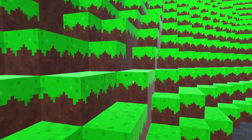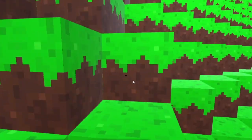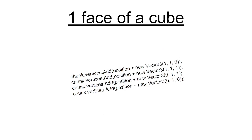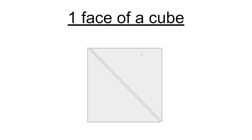Today we're just going to be making the first voxel. Each block is a voxel in Minecraft. Each one of our cubes is going to be made up of six faces, and each one of these is going to have four vertices — that's one of the jobs we're doing today, defining all the vertices and positions for each different face. We also have to use triangles in computer graphics, not squares, so each face will be made up of two triangles.